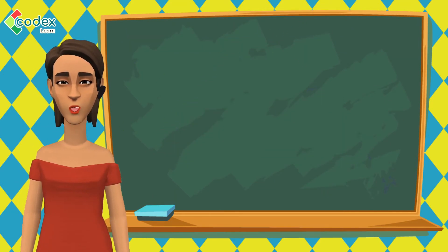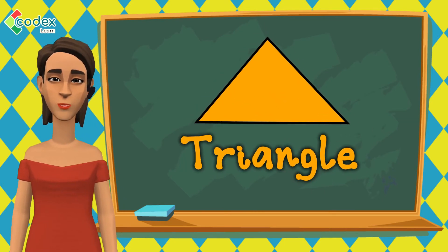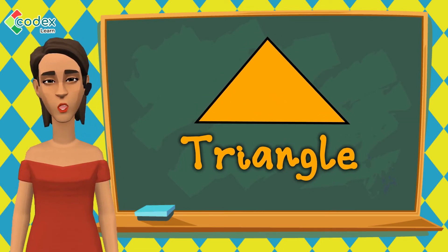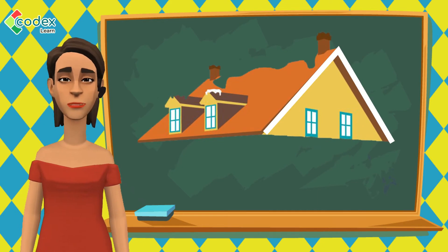That was simple, wasn't it? A triangle is a common shape we see everywhere. We see them on the rooftops of our houses and even in road sides.